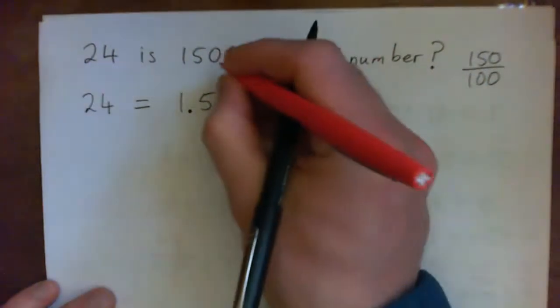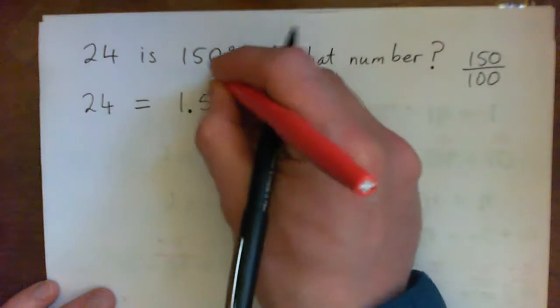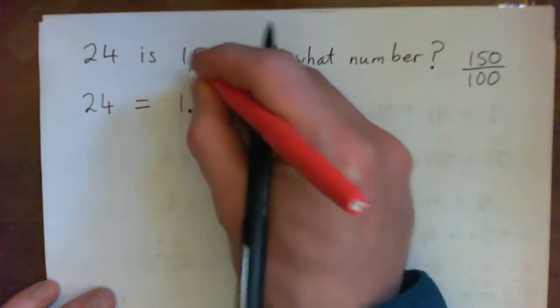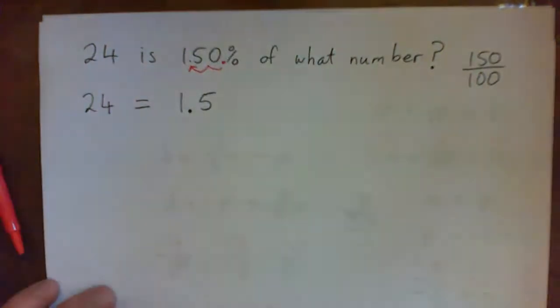Which gives us 1.5. Because 150%, the decimal point is here. You move it one, two spaces back here, and now it's 1.5.